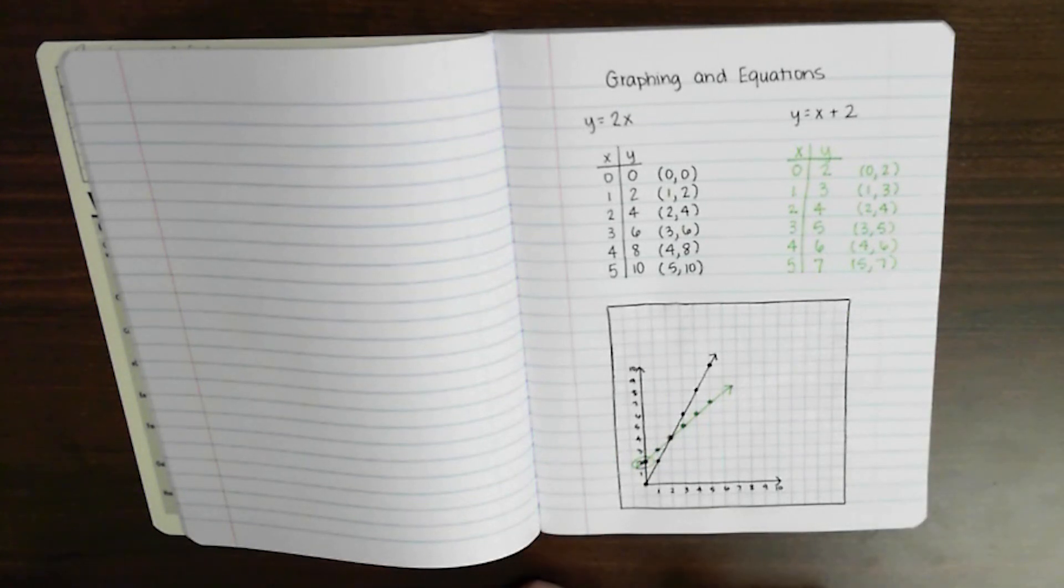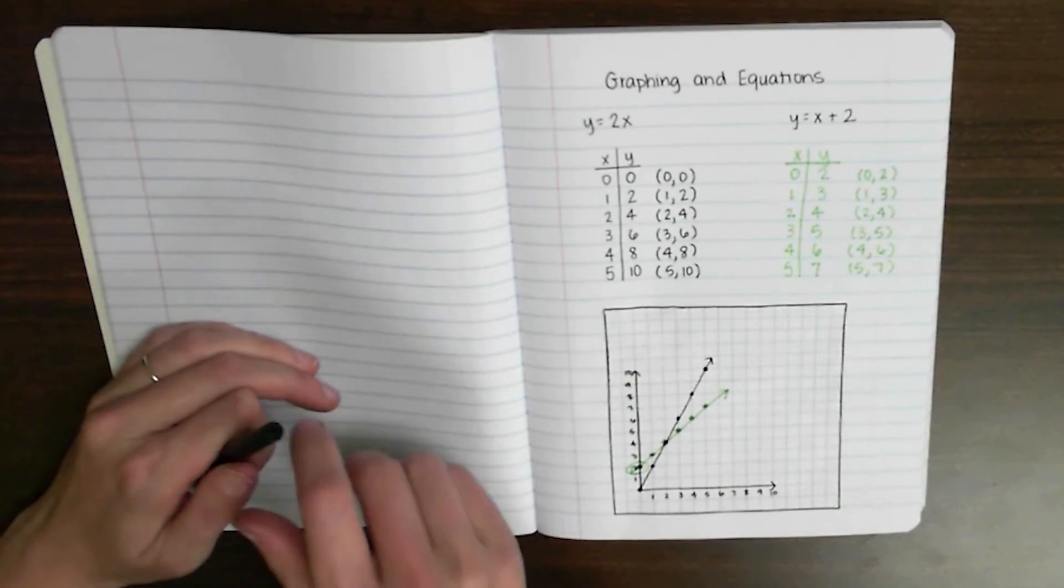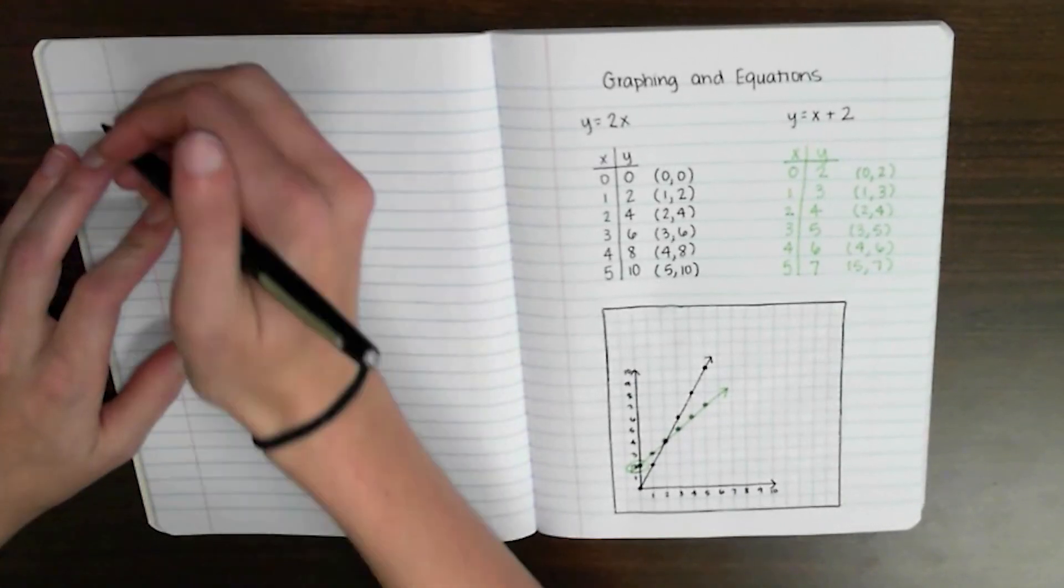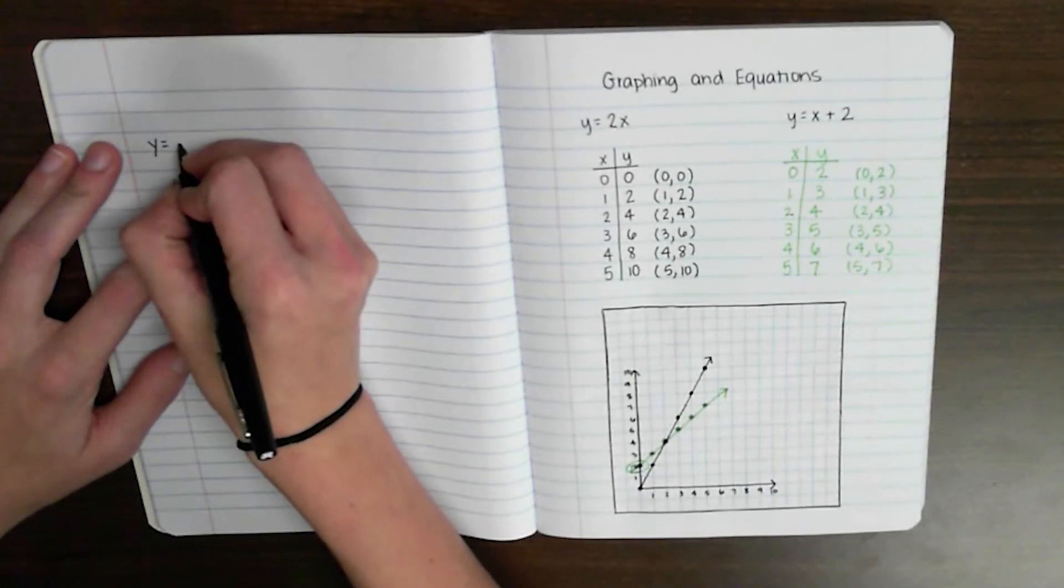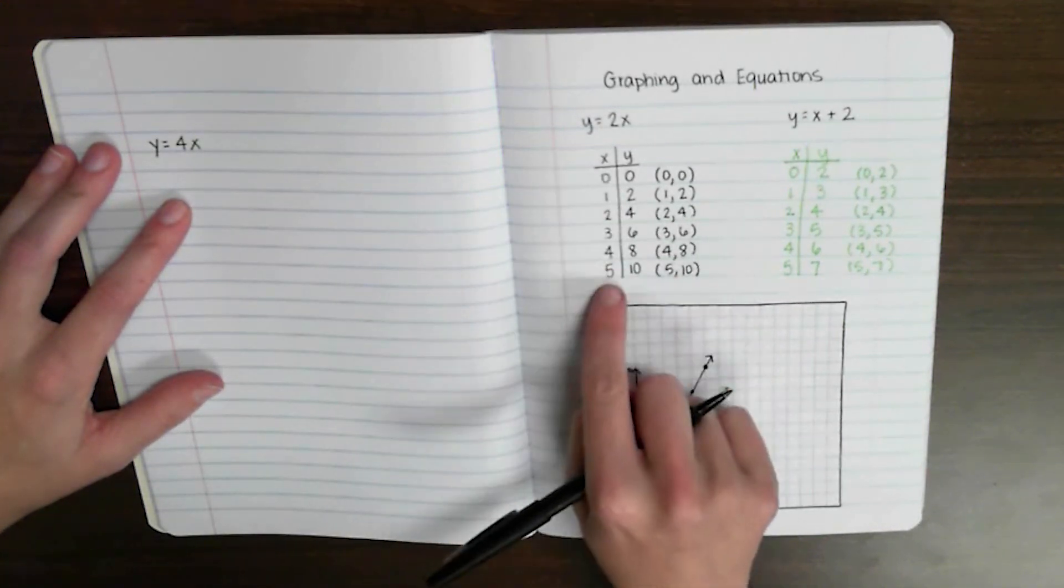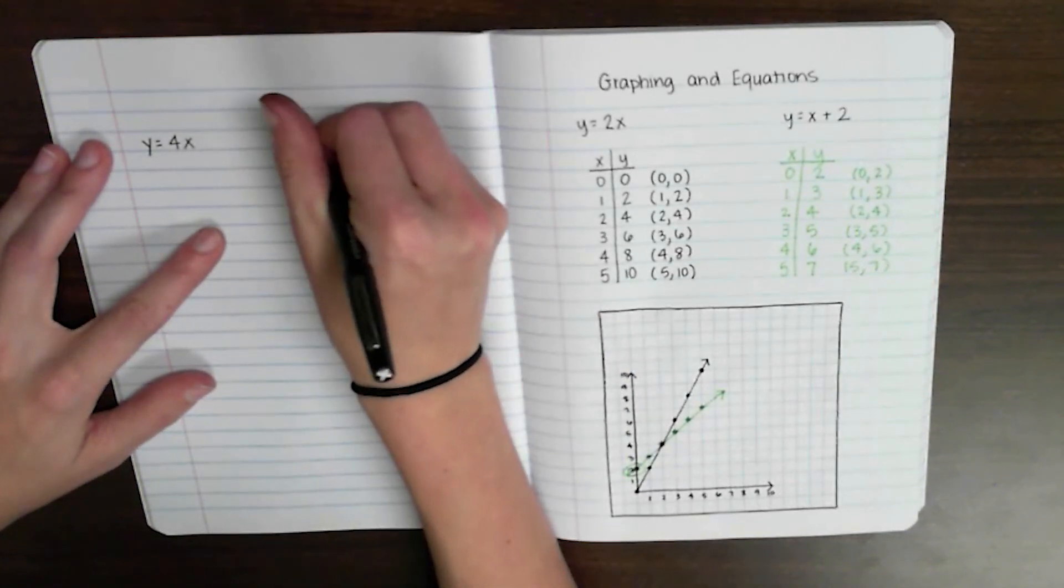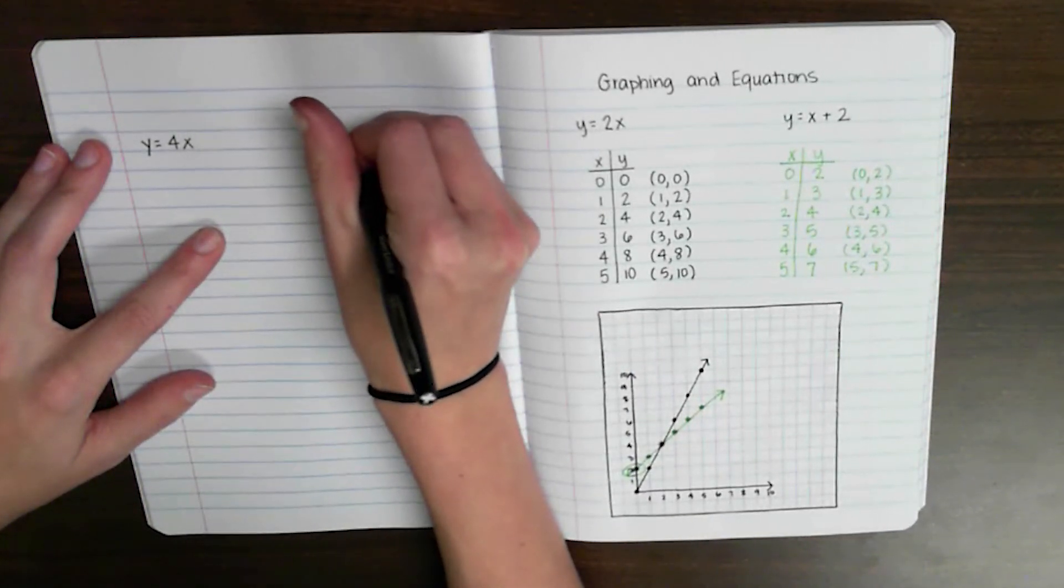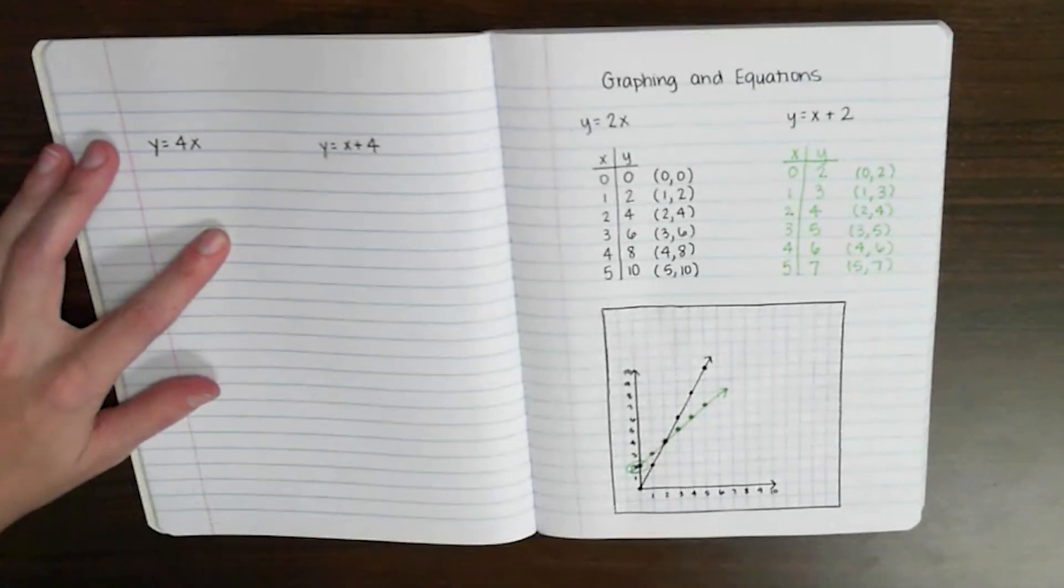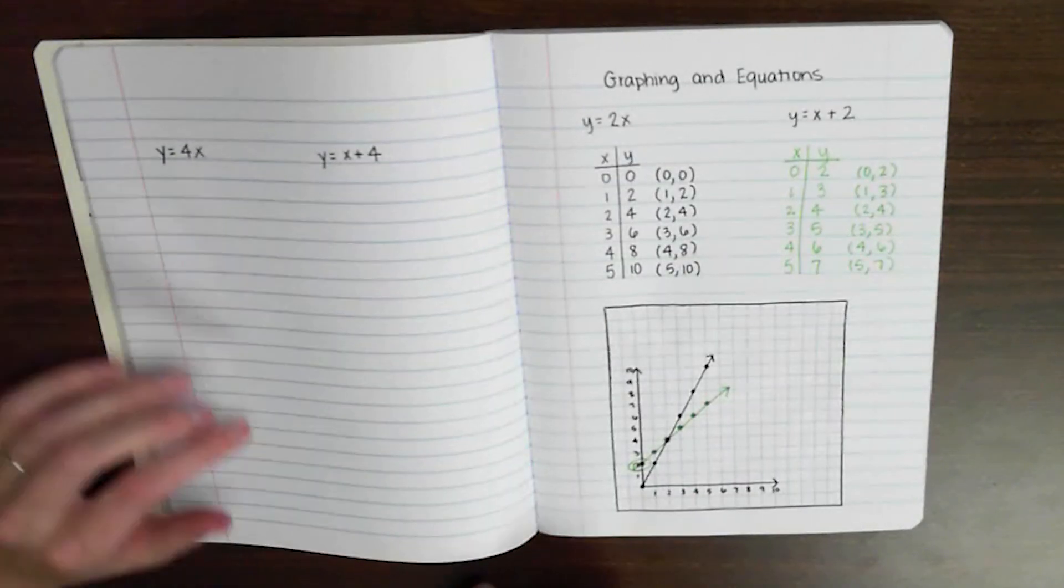Alright, so what I want you to try over on your left side, I'm going to give you just one multiplicative pattern and one additive pattern to try graphing on the other side. So over here, for you to try on your own, I want you to try graphing y equals 4x. Let's see what happens with that. You can use the same x values that I used over on the note side. You just do 0 through 5, or if you want to do more than that, you certainly can. And then your additive pattern that I want you to try is y equals x plus 4. See how those turn out? Maybe jot down some thoughts about how that compares with these patterns that we did over on the right-hand side.